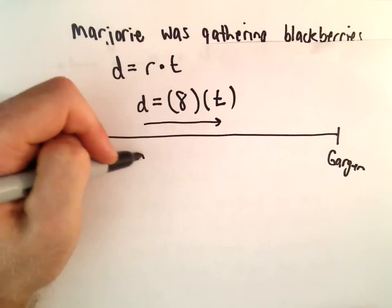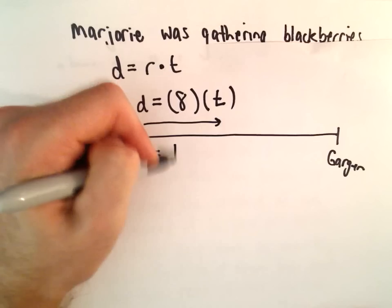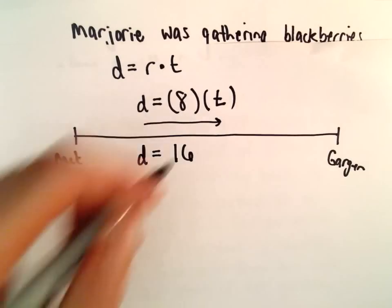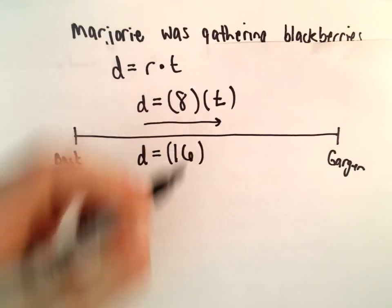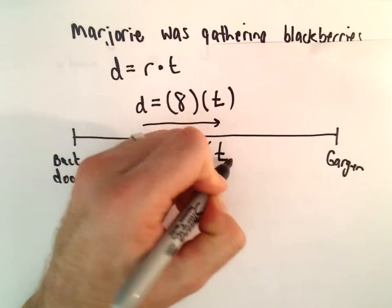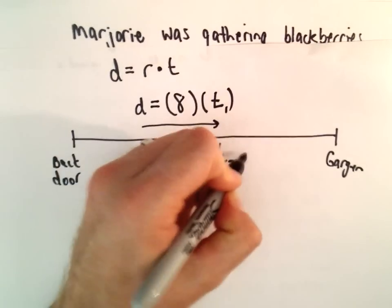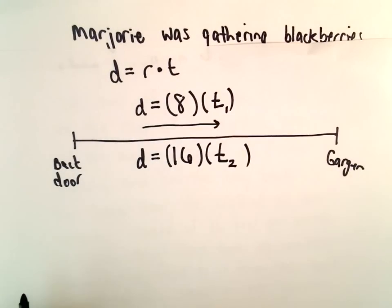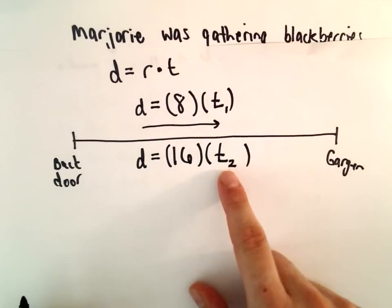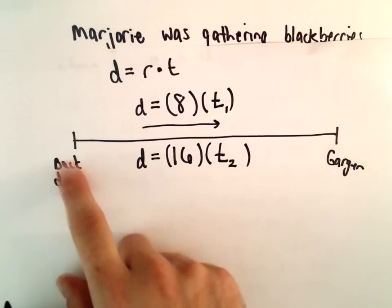On the way back, again, it's going to be the same distance. We know that her rate is 16 feet per minute. And it'll be a different time. So let me call my second one here, little T2. Maybe I'll put a little subscript of T1 on the first one. So it took some amount of minutes when she walked out and some different amount of minutes when she came back.